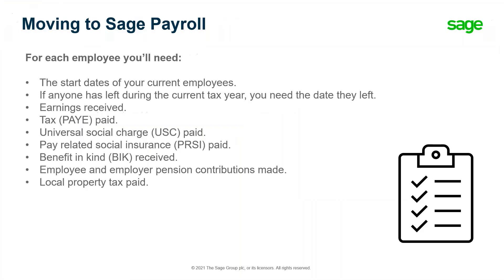For each employee you will need: their start dates; if anyone has left during the current tax year, the date they left; earnings received so far in the tax year; deductions such as PAYE, USC, and PRSI; any year-to-date benefit in kind information; any pension information; and any LPT (Local Property Tax) paid. You can get all of this information from your previous software.